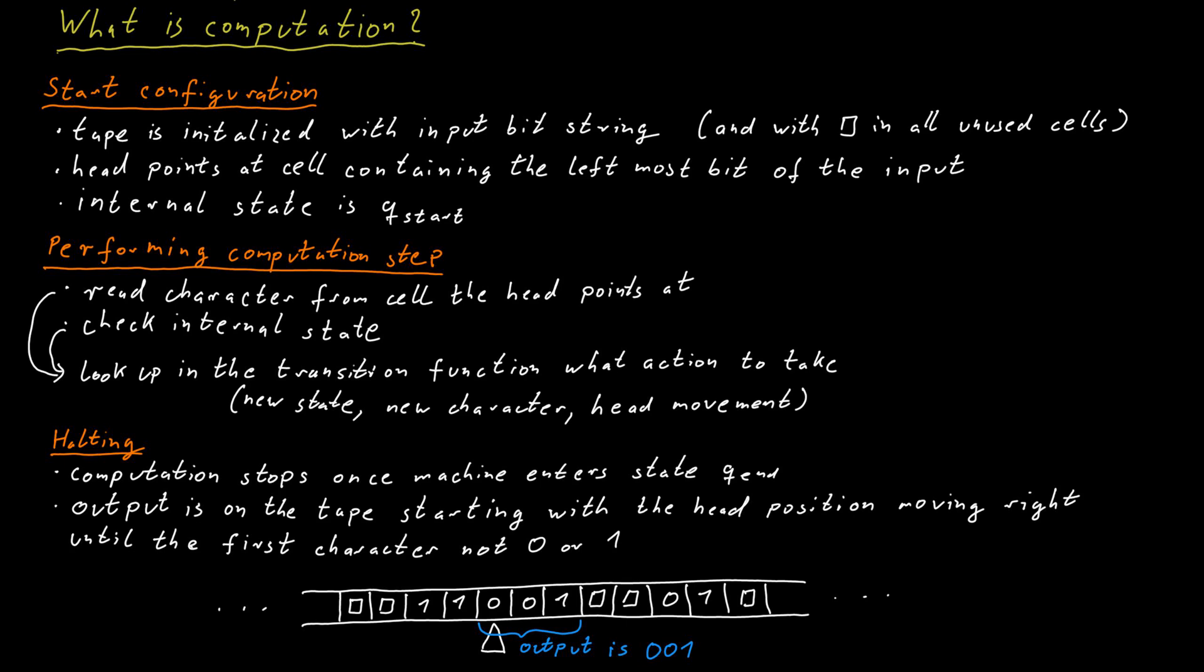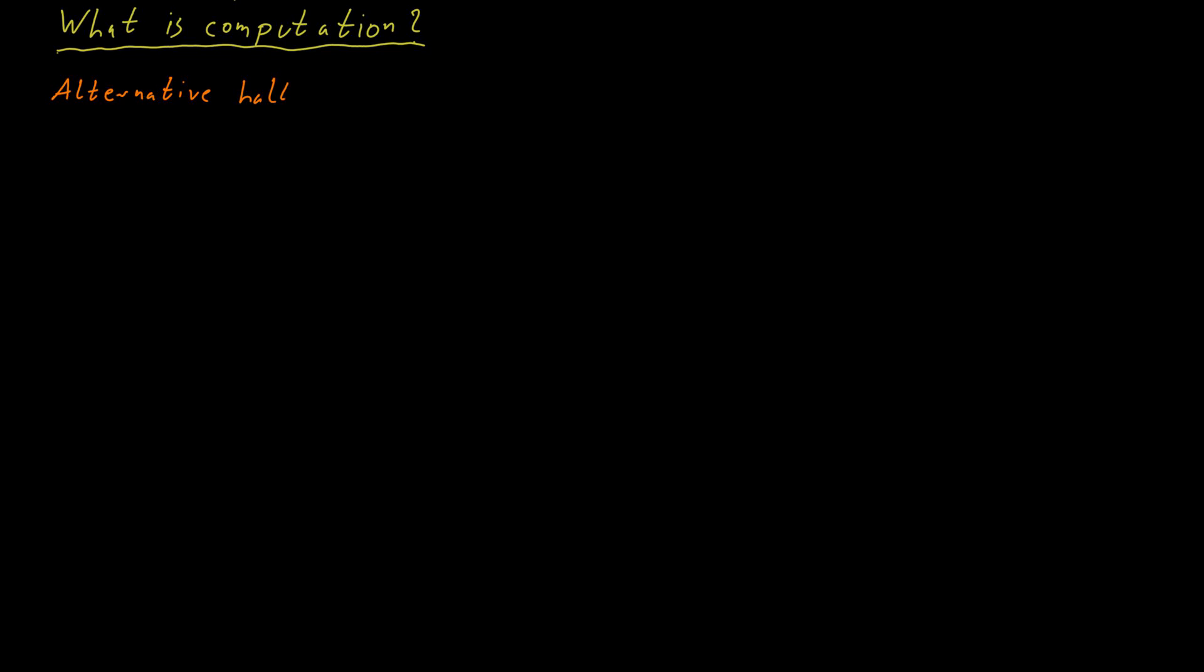We should mention that sometimes we will use a different type of output because for decision problems, remember that the output is not really a bit string, but it actually is just a single bit. So just zero or one, no or yes. And in that case, we can also define a different way for the Turing machine to terminate. Instead of a single halting state, we have two halting states called Q yes and Q no.